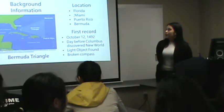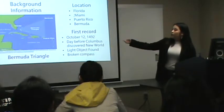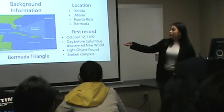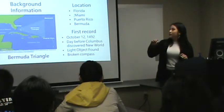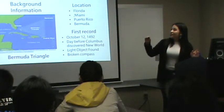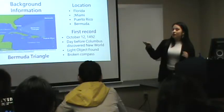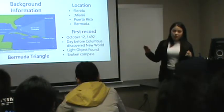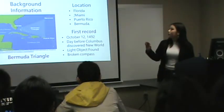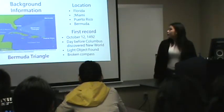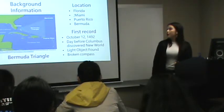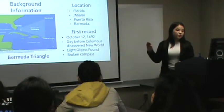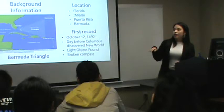The first thing I am going to explain is background information. This picture explains the location of the Bermuda Triangle. The Bermuda Triangle is a triangular sea area that connects Bermuda Island in the Atlantic Ocean with Florida and Puerto Rico. Its first record was on October 12, 1492. It was the day before Columbus discovered the new world, and he and his crew saw a shiny object on the water. After then, their compass became broken.